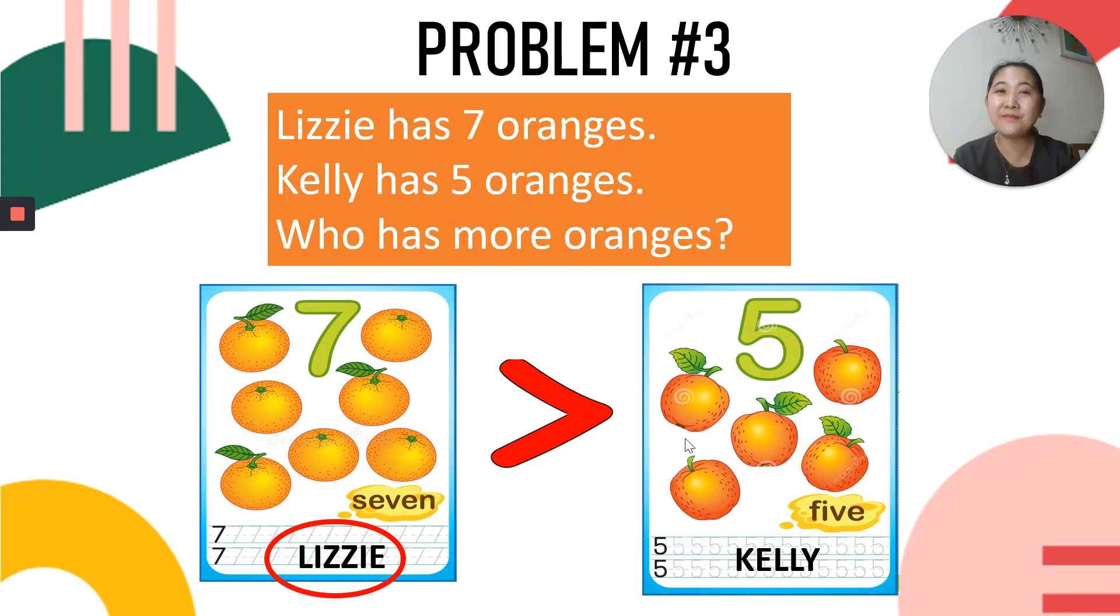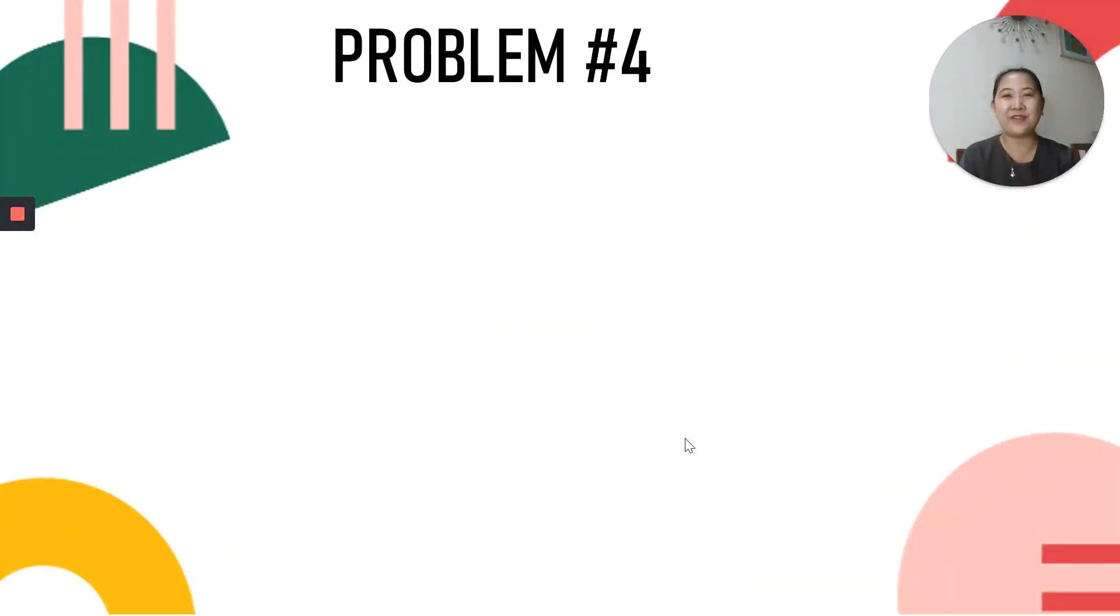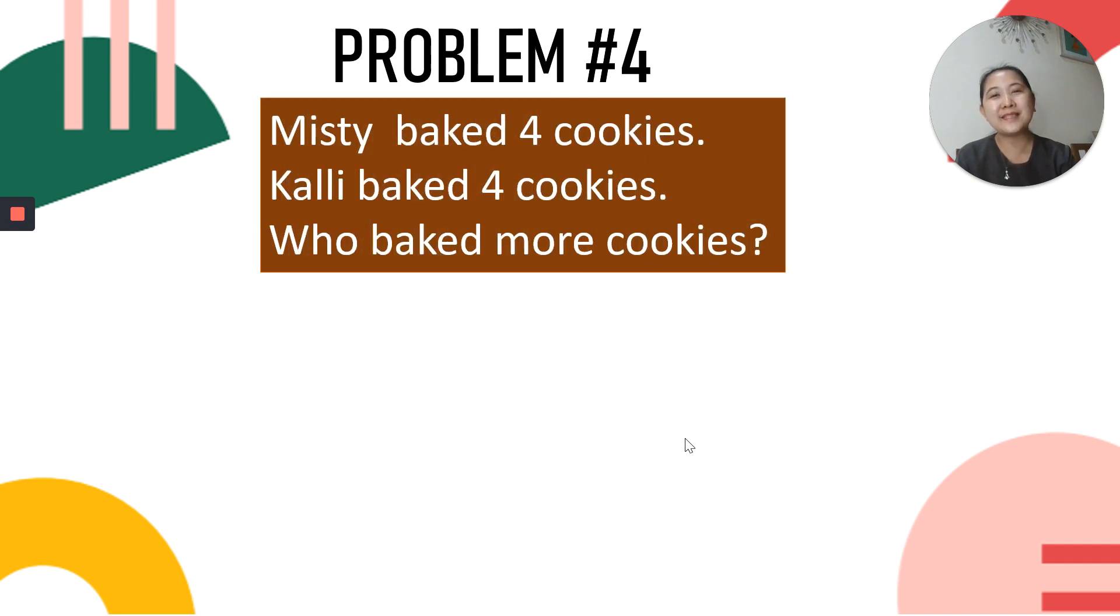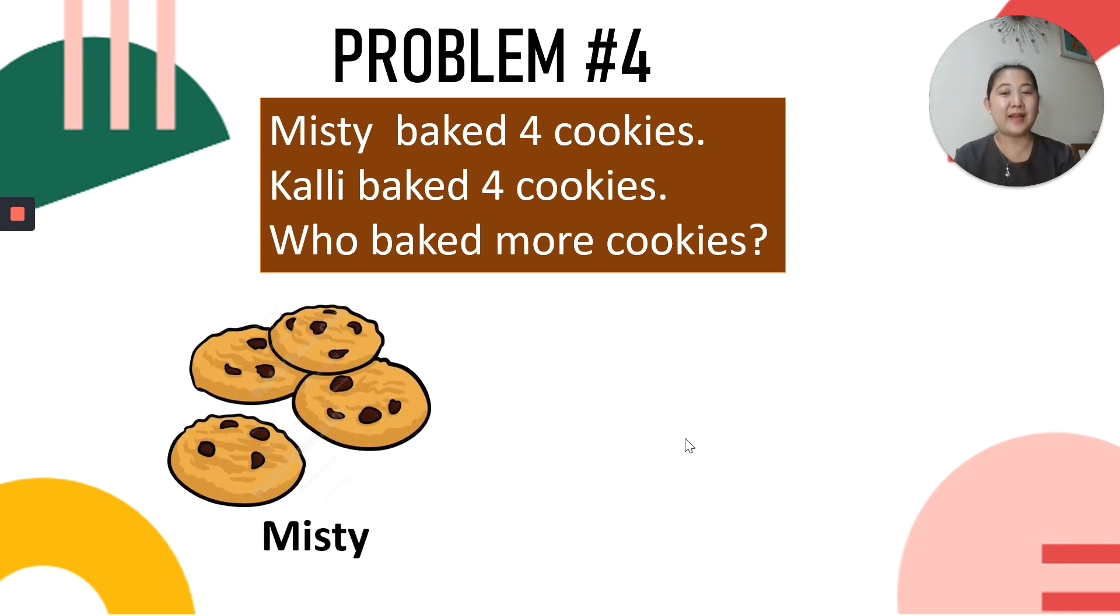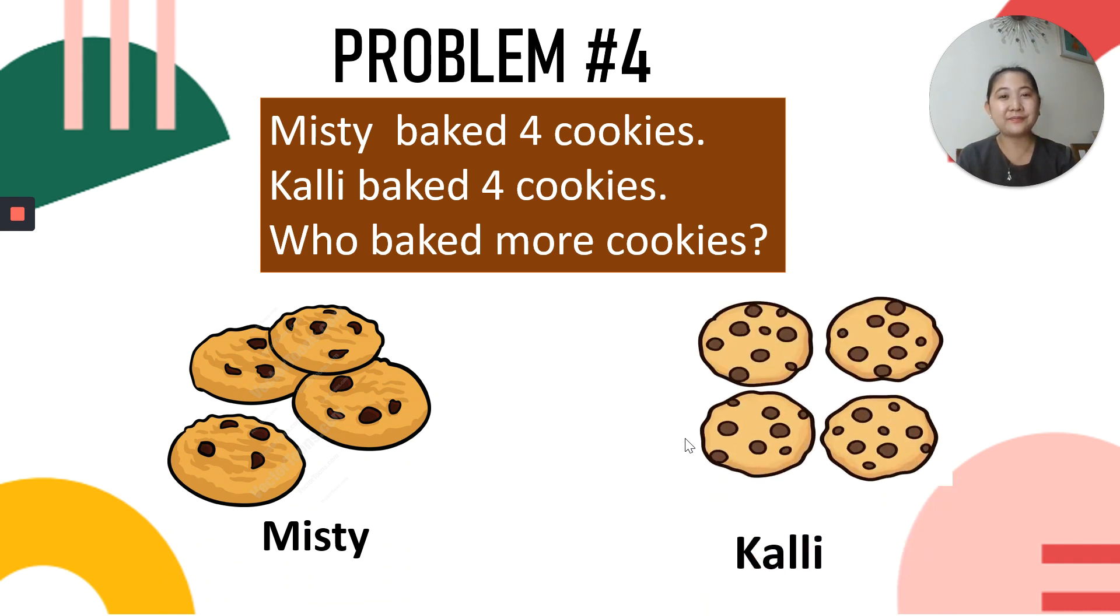Are you ready for the next problem? Yes, I like that. You are very good and very participative. Now, look at problem number 4. Misty baked 4 cookies. Kelly baked 4 cookies. Who baked more cookies? Look at Misty. She baked 4 cookies. Now, who baked more cookies? Think. Very good. They are the same. So, nobody baked more, but they baked the same number of cookies. That's right.